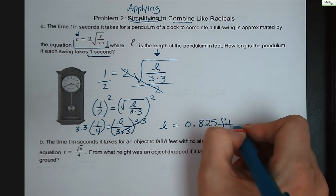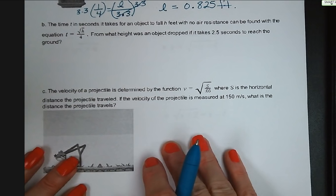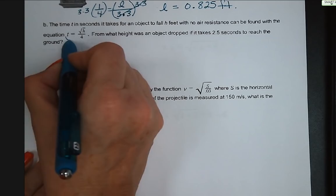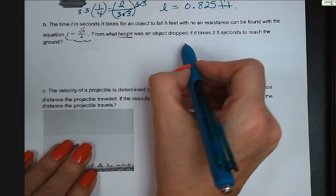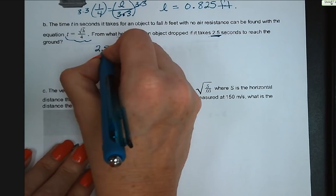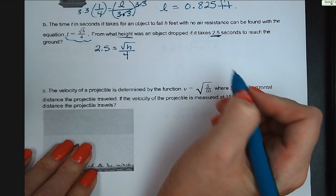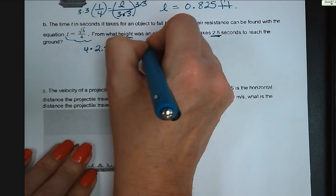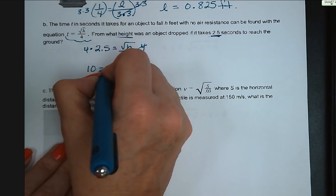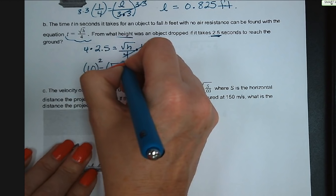Letter b: the time for an object to fall h feet with no air resistance is t equals the square root of h over 4. If it takes 2.5 seconds to reach the ground, substitute 2.5 for t: 2.5 equals the square root of h over 4. Multiply both sides by 4 to get 10 equals the square root of h. Square both sides — the height is 100 feet.